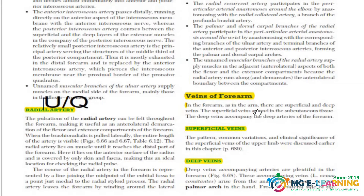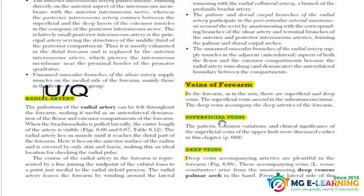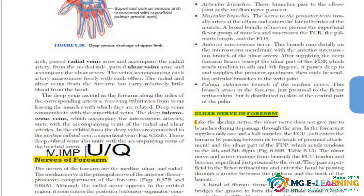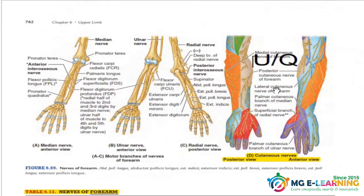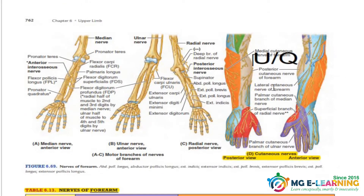If you talk about the veins of the forearm, to be honest these are not that important — just give it a read and it's enough. Then we have the nerves of the forearm. The nerves of the forearm are really, really important for MCQs and scenario-based UQs. With the ulnar nerve in the forearm, you should know the course, the distribution, each and everything. The cutaneous innervation is a very famous SEQ — SEQs do come from here, you have to draw these, so you should learn this.